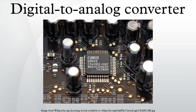The binary weighted DAC contains individual electrical components for each bit of the DAC connected to a summing point. These precise voltages or currents sum to the correct output value. This is one of the fastest conversion methods but suffers from poor accuracy because of the high precision required for each individual voltage or current. Such high precision components are expensive, so this type of converter is usually limited to 8-bit resolution or less.